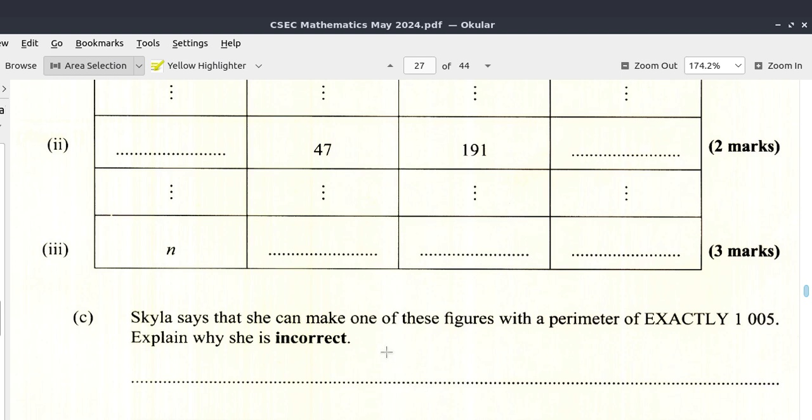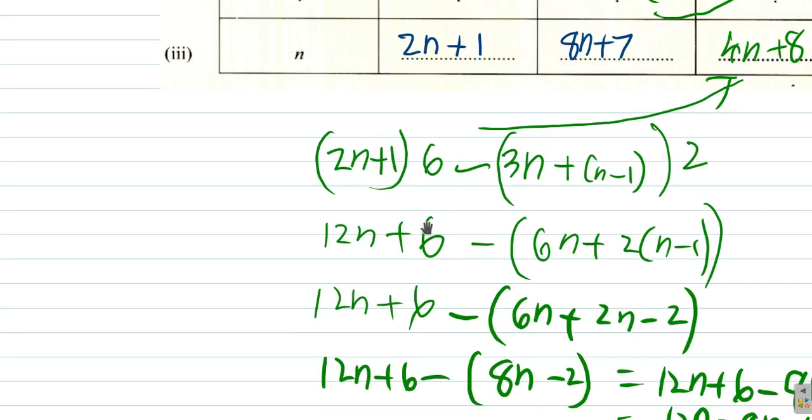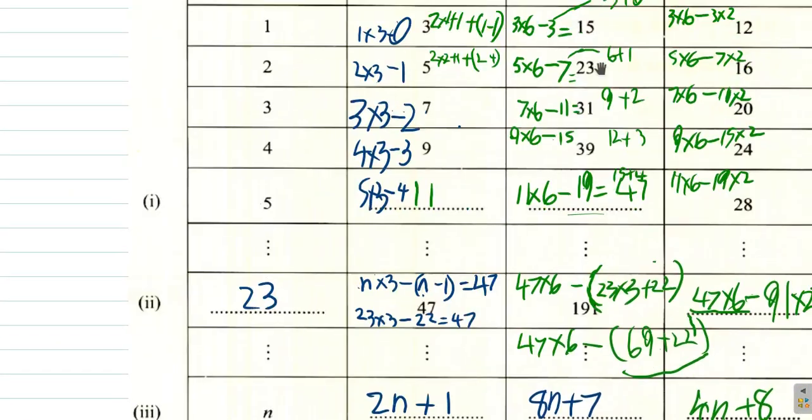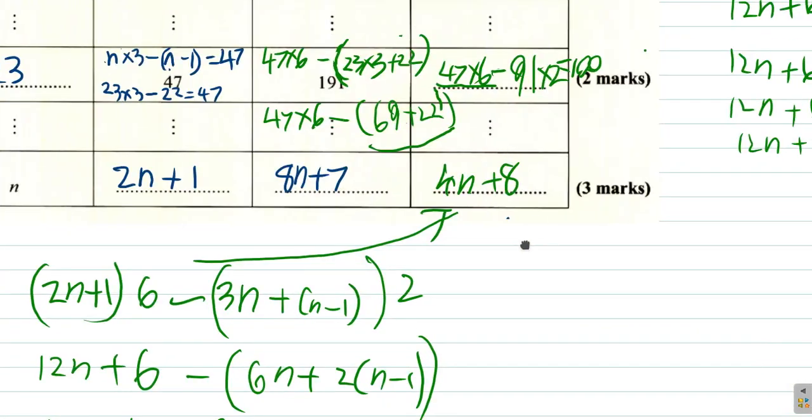All right, so we're at part C. Skyla says she can make one of the figures with a perimeter of exactly 1005. Explain why she's incorrect. All right, so it's 1005. Perimeter 1005, let's see. This is where we had left off the working. But the perimeter, this perimeter, 4n plus 8.